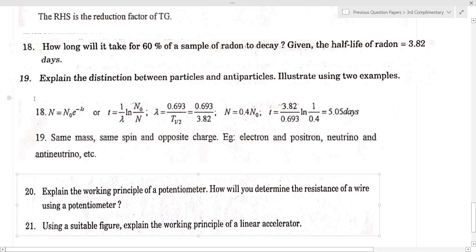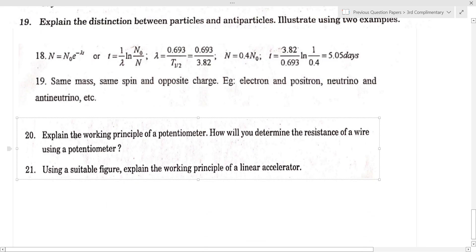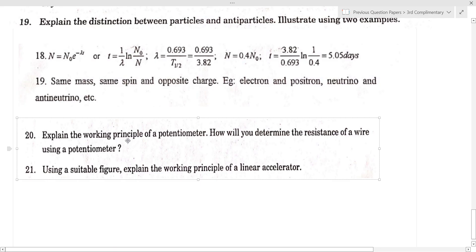Using a potentiometer, the working principle is that the potential is proportional to the length of the potentiometer wire. For measuring resistance, the balance length relation is X by R equal to L1 by L2.